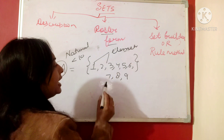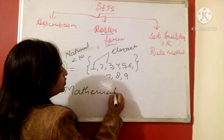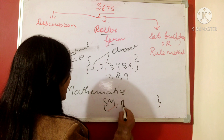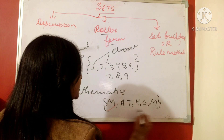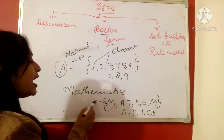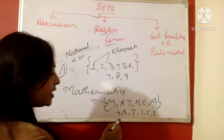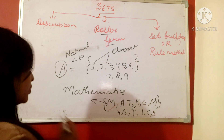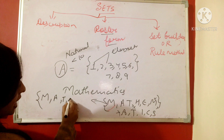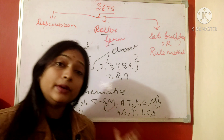Elements are always separated by commas. Now if I take the word 'mathematics' and represent it in roster form, we write: {m, a, t, h, e, m, a, t, i, c, s}. But here it is very important — we do not write repeated elements. For example, m is repeated, a is repeated, t is repeated, so we write each element only once: {m, a, t, h, e, i, c, s}.